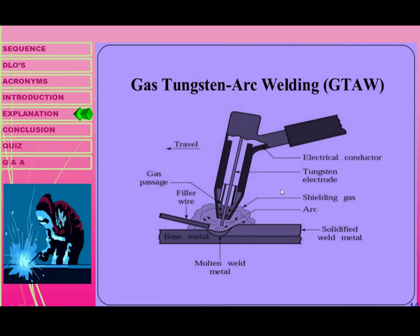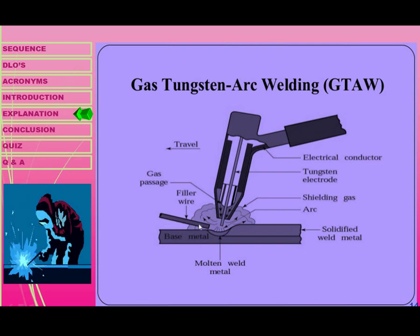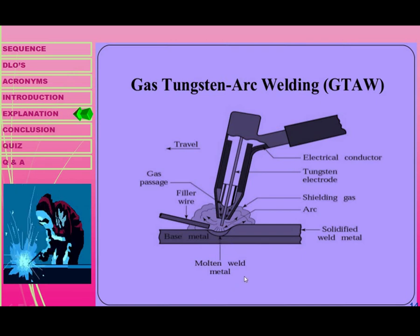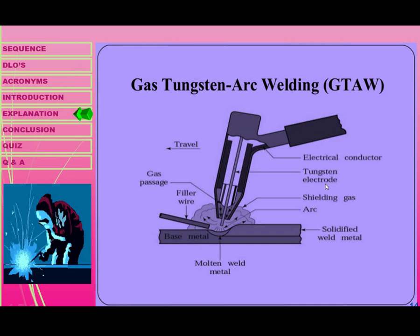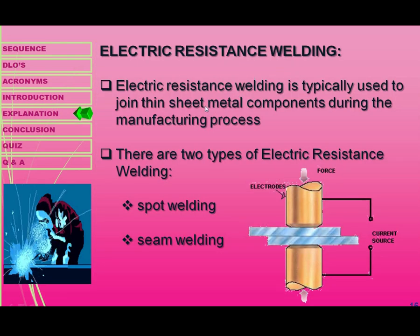In Gas Tungsten Arc Welding, a tungsten electrode is used instead of other electrodes. The shielding gas and arc are produced, and a filler wire is utilized — this filler wire is melted and fused with the base metal to create a joint. The molten weld metal, also called fused metal, forms the joint. Tungsten is the metal used as the core electrode, which is why it is called Gas Tungsten Arc Welding.